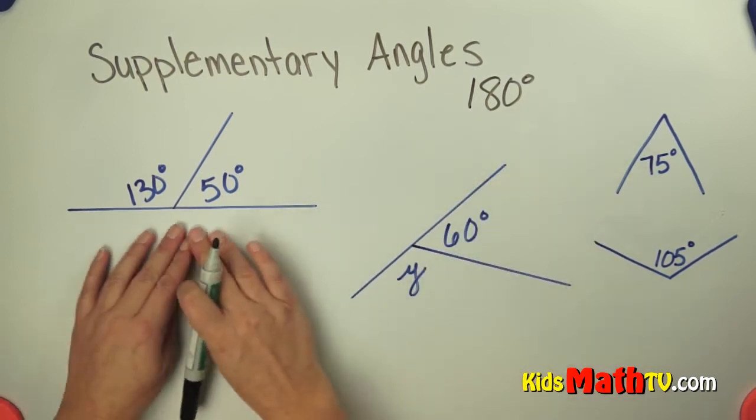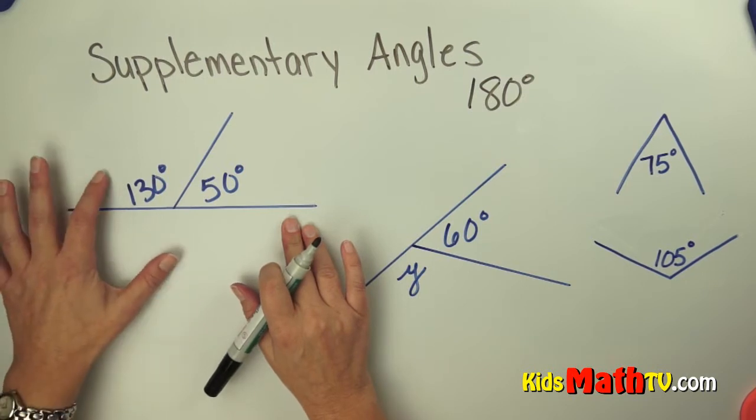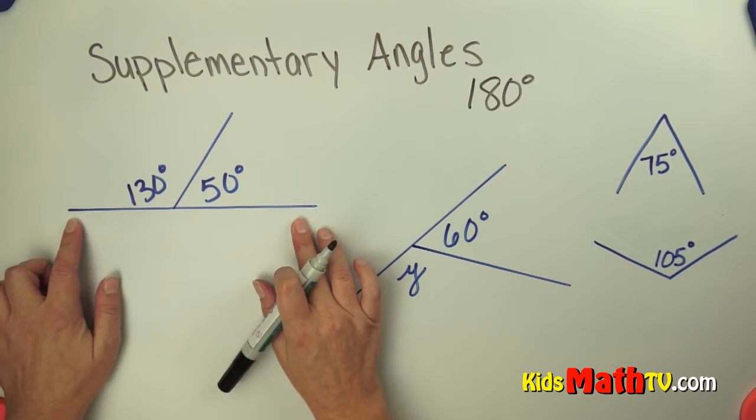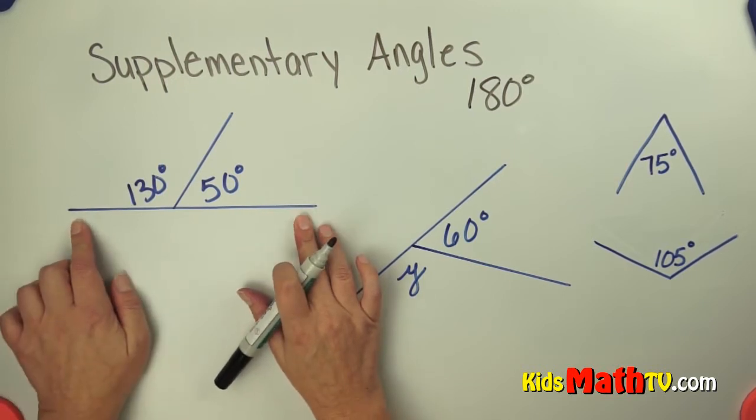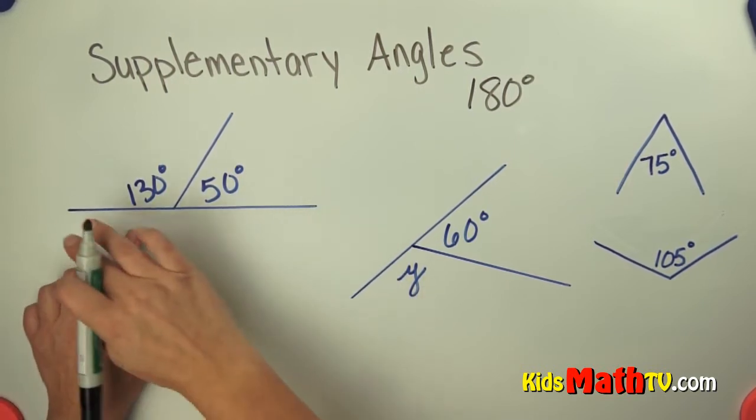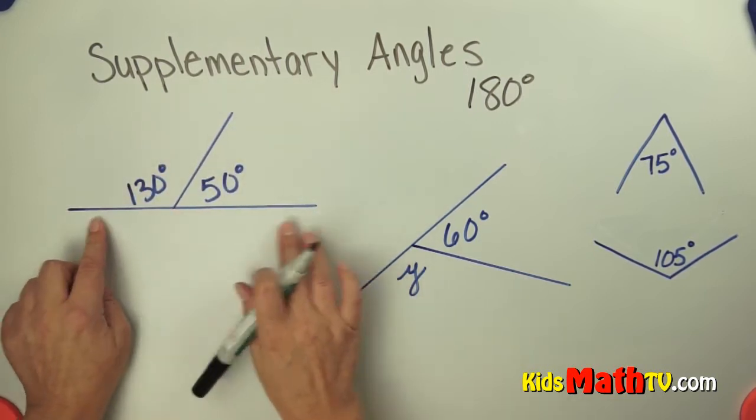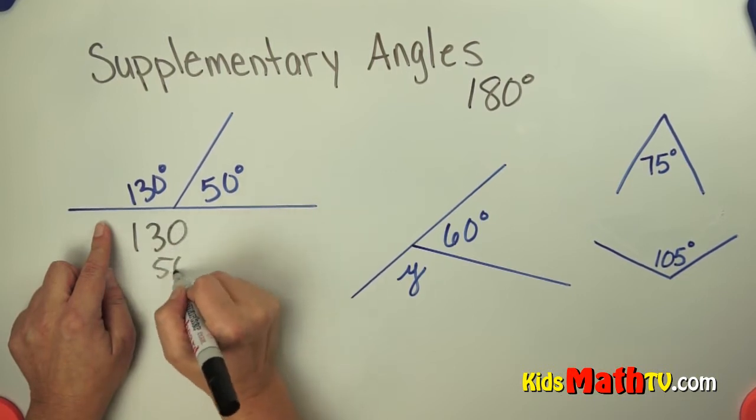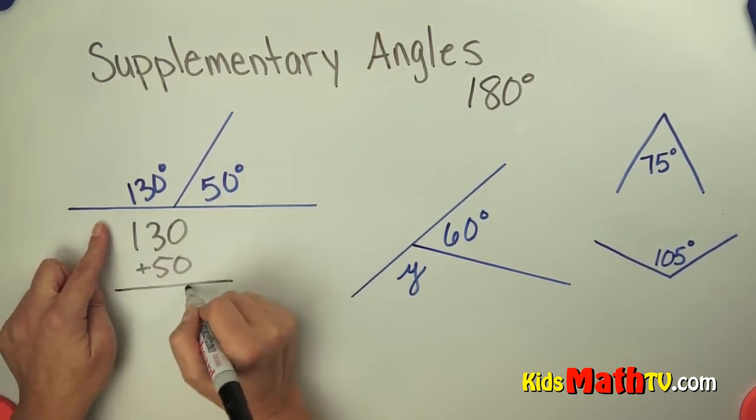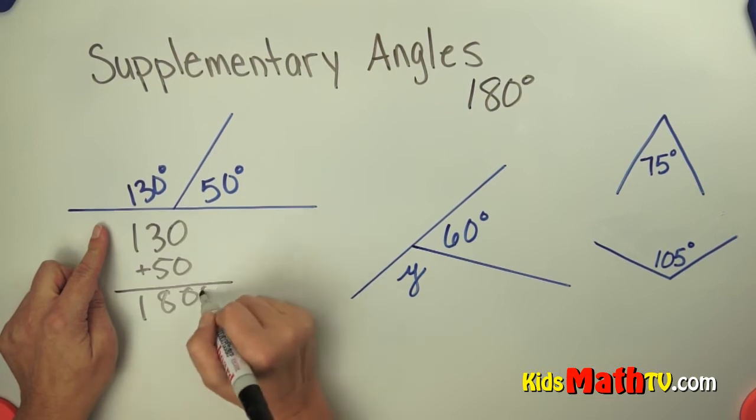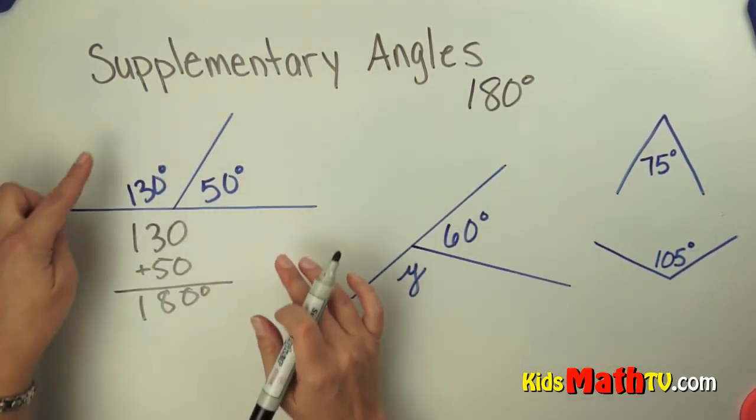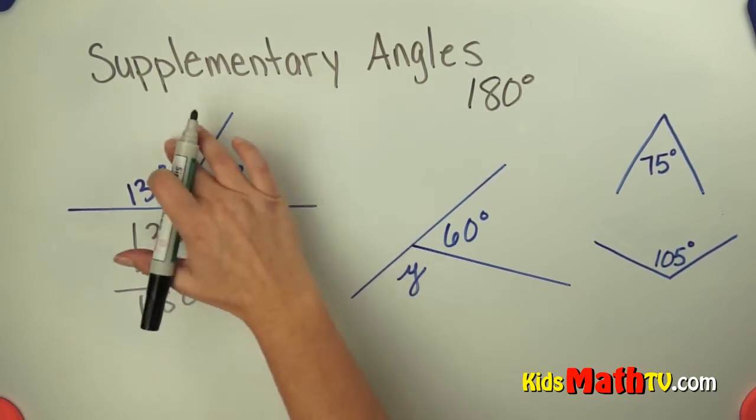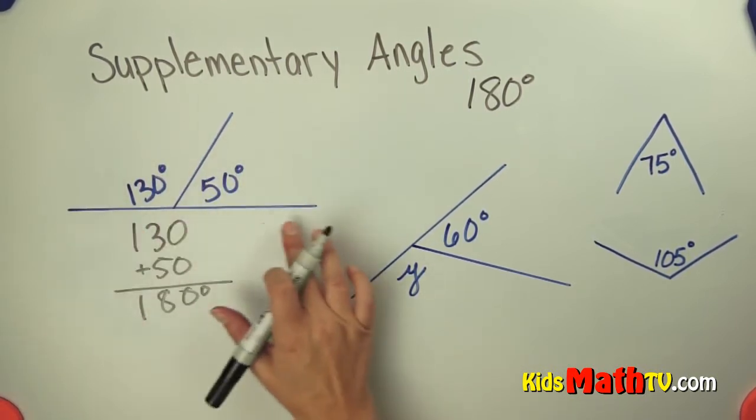So this is an example of supplementary angles. We have 130 degrees and 50 degrees and it creates this 180 degree line. And a 180 degree angle is a line, a straight line. So if we add 130 plus 50 we get 180 degrees to make the supplementary angles. So 130 degrees and 50 degrees are supplementary angles because they add to 180 degrees.